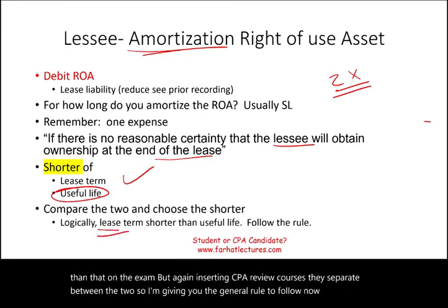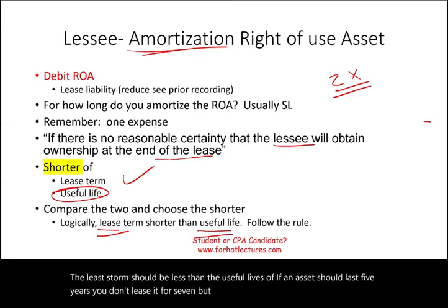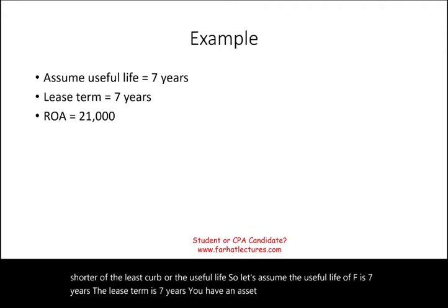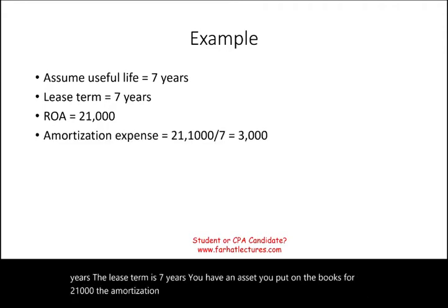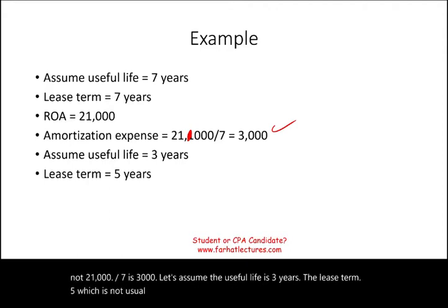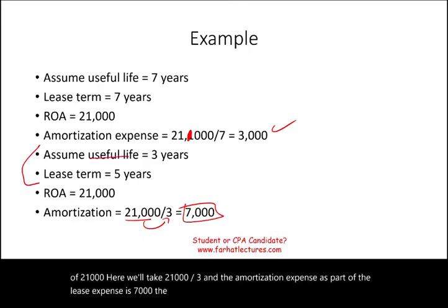Logically the lease term should be less than the useful life — you don't lease an asset for longer than it lasts. But follow the rule: the shorter of the lease term or the useful life. For example, if the useful life is seven years and the lease term is seven years, with a right-of-use asset of $21,000, the amortization expense is $21,000 ÷ 7 = $3,000 per year. If the useful life is three years and the lease term is five years, you take $21,000 ÷ 3 = $7,000 per year amortization expense.